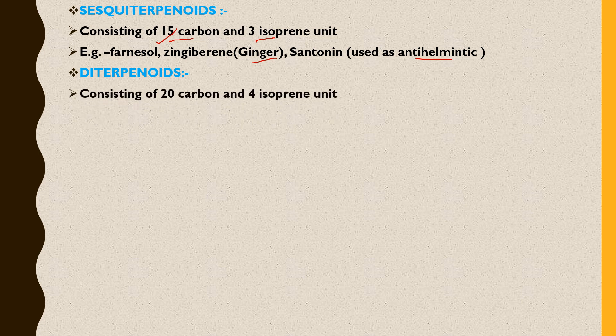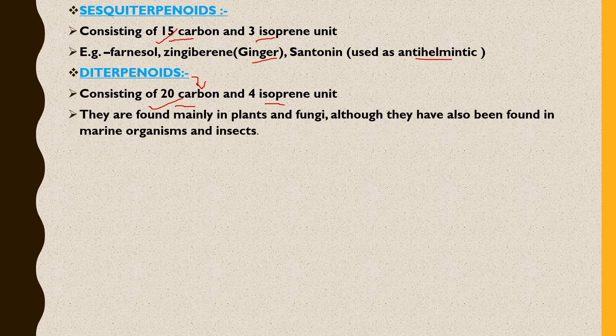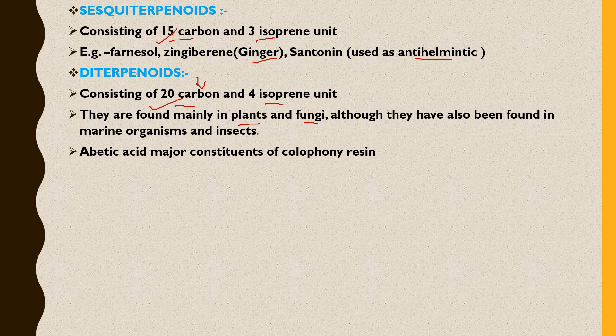Diterpenes contain 20 carbons and 4 isoprene units. They are found mainly in plants and fungi, although they are also found in marine organisms and insects. An example of a diterpene is abietic acid.